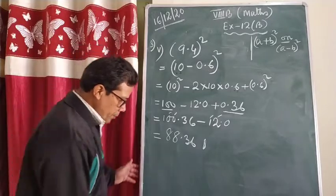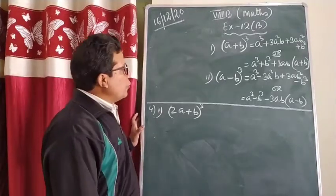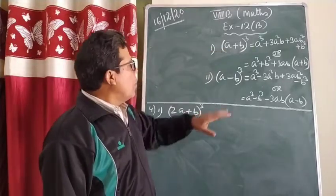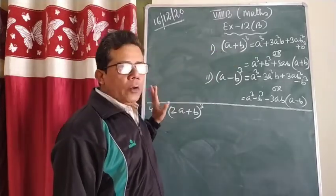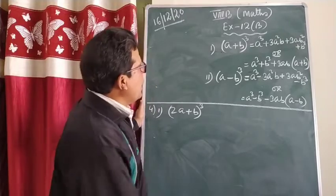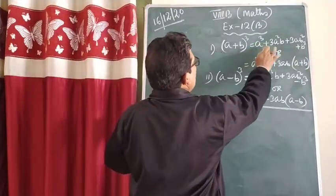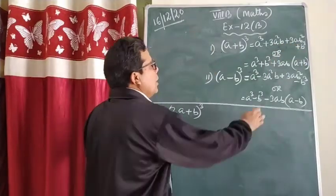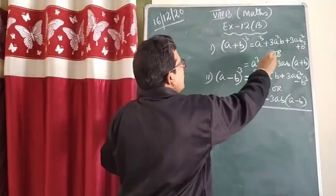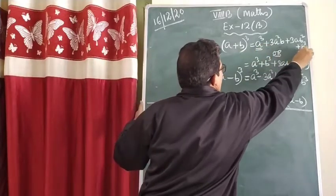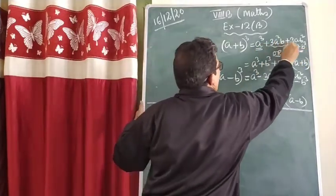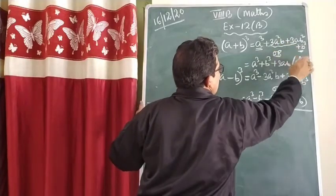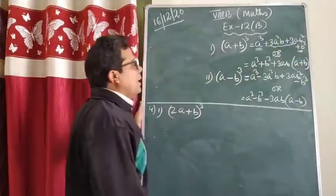Now I am going to solve one or two problems from question number four in today's class. Question number four we are going to solve with these two formulas. What is the first one? (a+b)³. How does it come? It comes as a³ + 3a²b + 3ab² + b³. Or the same thing you can write by taking 3ab common from the middle two terms, giving a³ + 3ab(a+b) + b³.